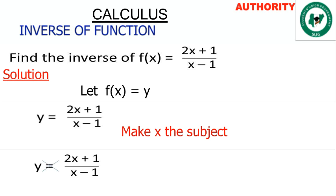Here we can do two things: either you cross multiply or you multiply both sides by the denominator, which is x minus 1. Let's cross multiply, so we have y times open bracket x minus 1 close bracket equals 2x plus 1.